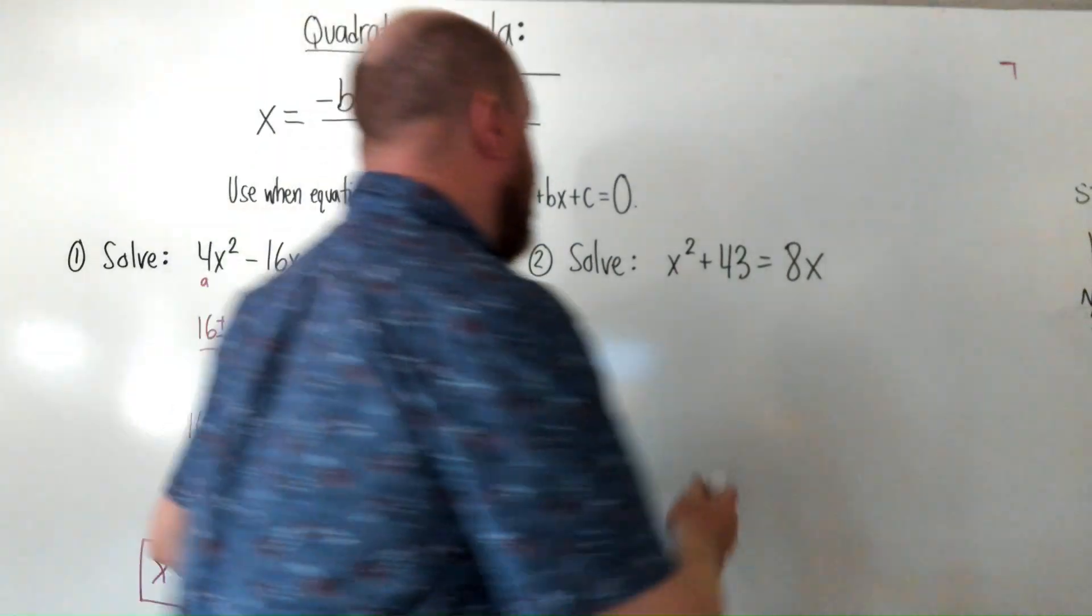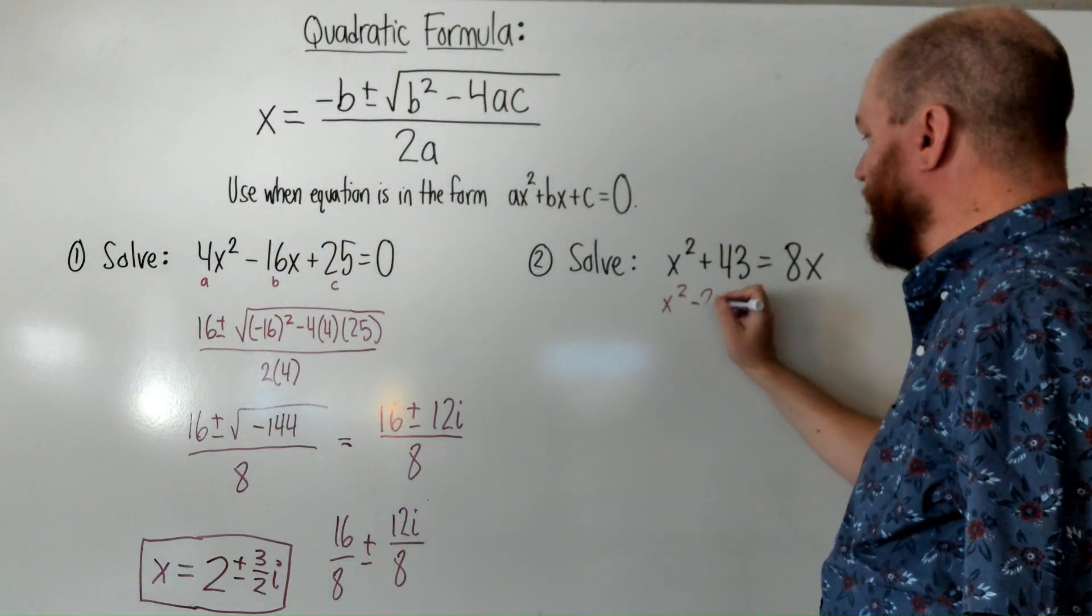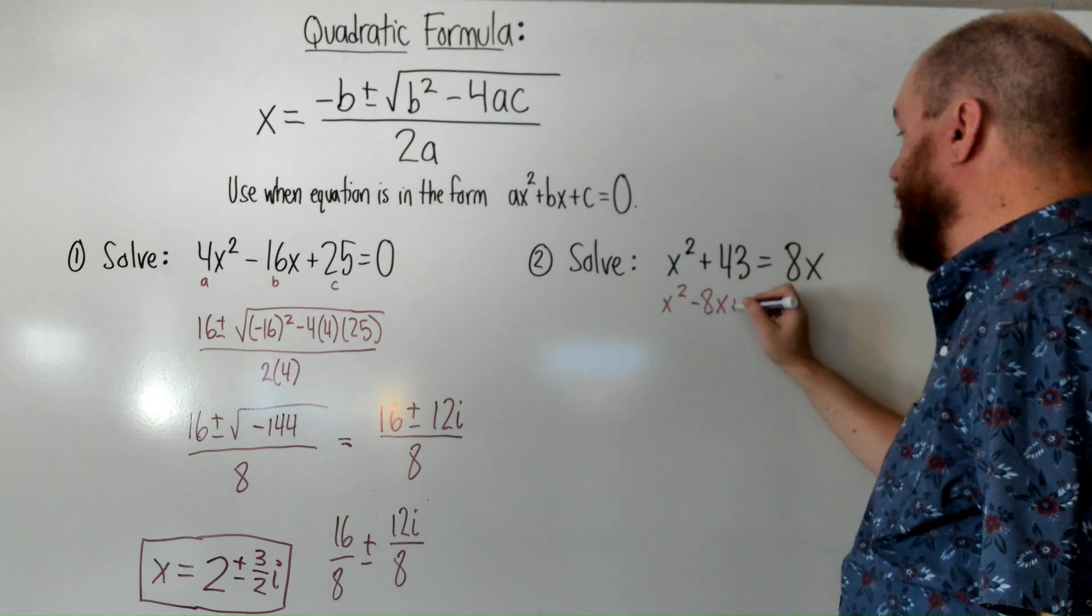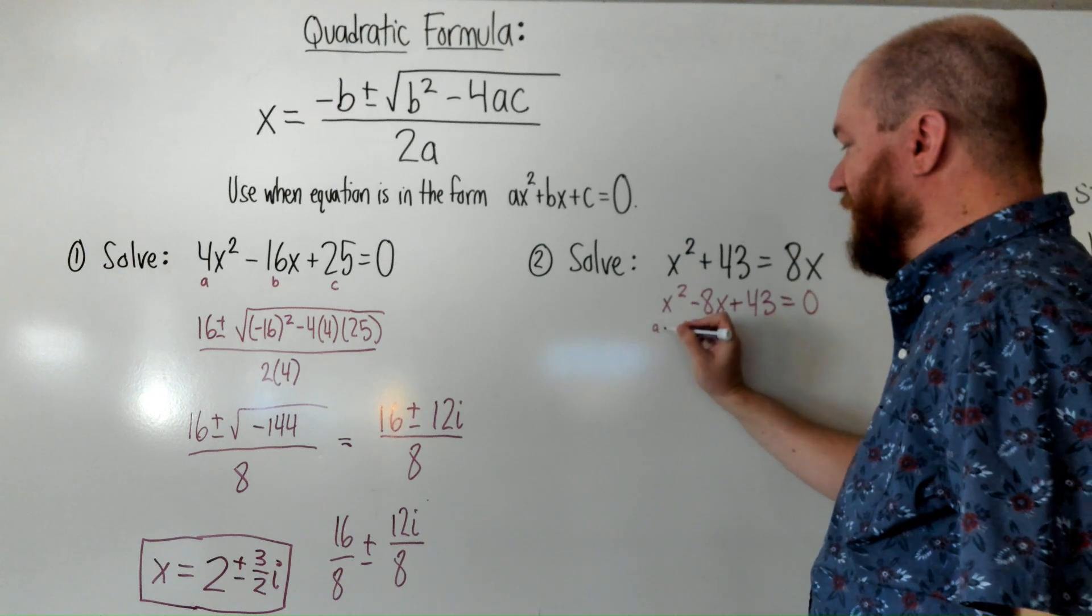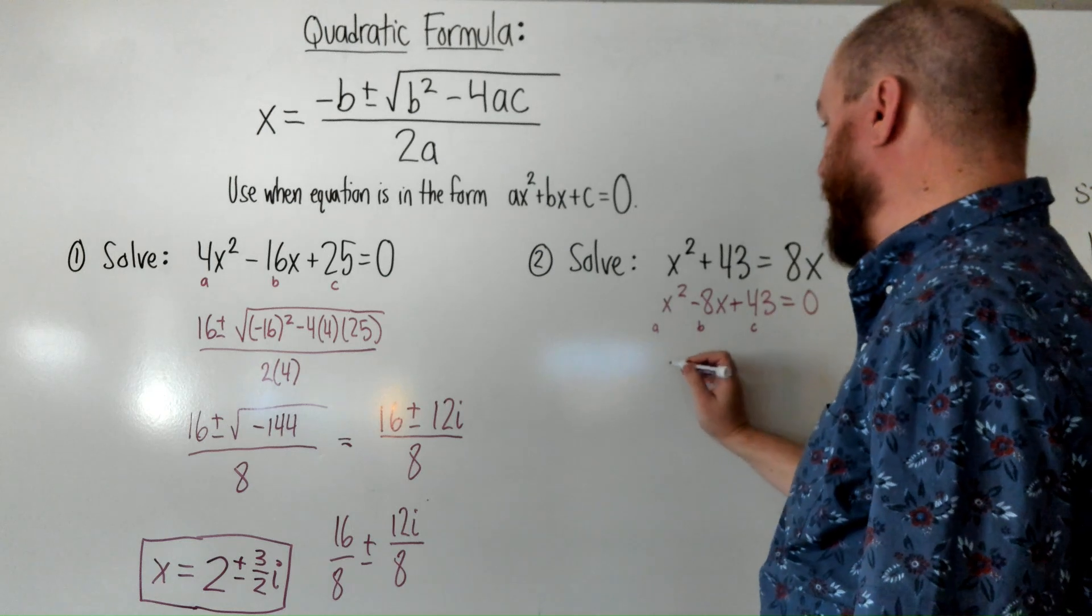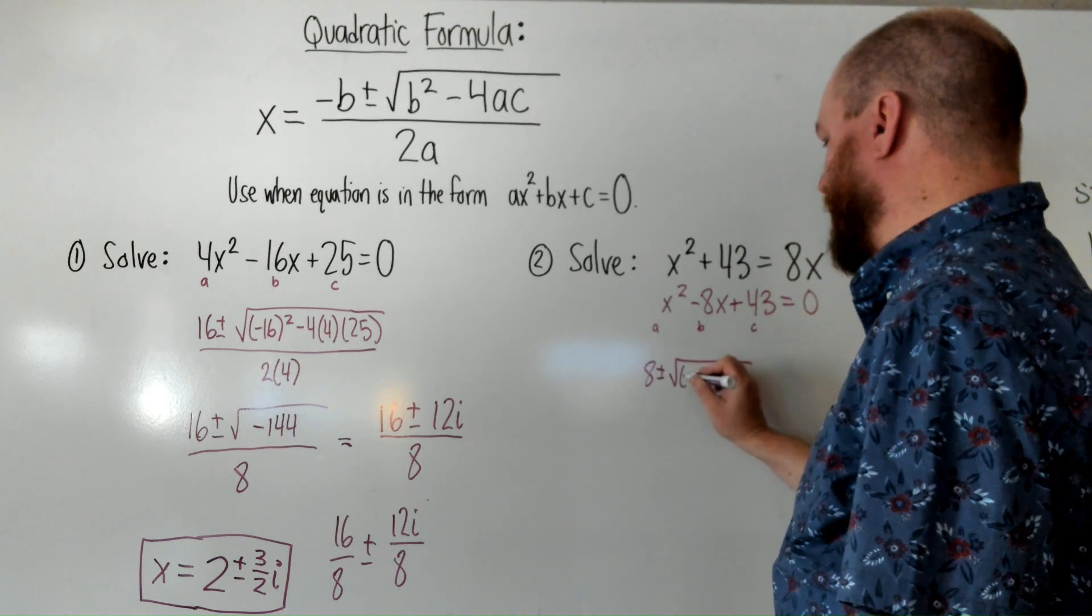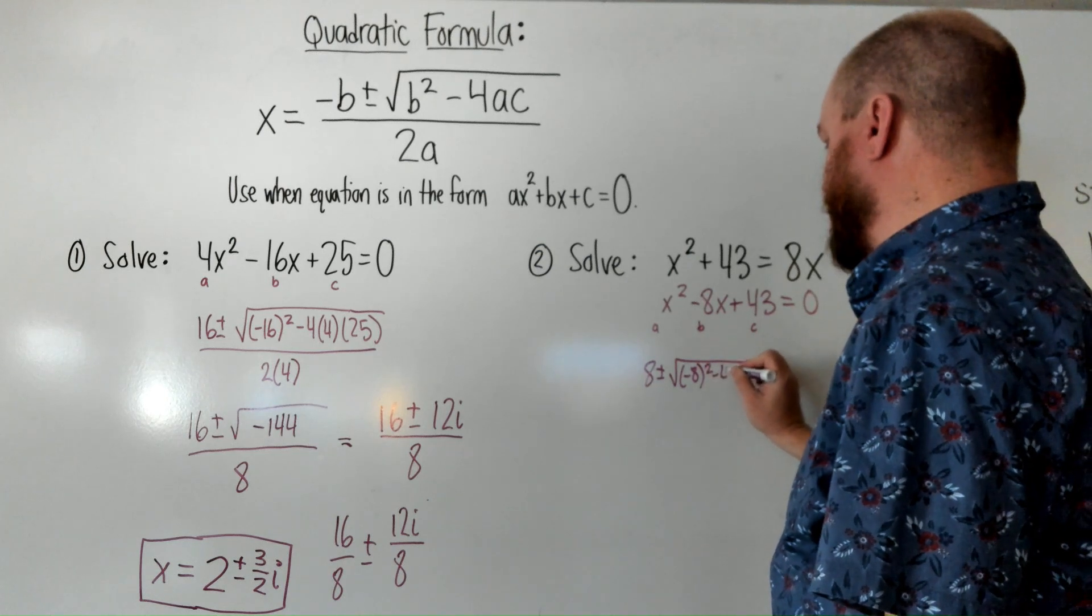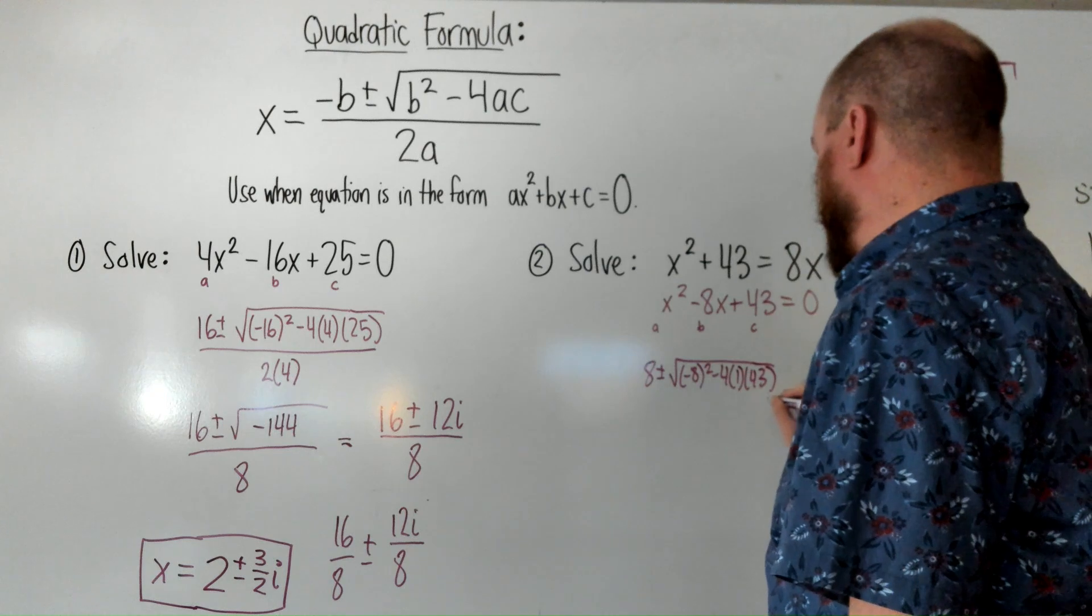All right, one more example here. This one's not in standard form, so let's start by just moving the 8x to the other side. And then, let's label A as 1, B is negative 8, C is 43. So, that'll be 8 plus or minus square root negative 8 squared minus 4 times 1 times 43 all over 2.